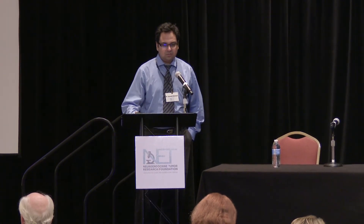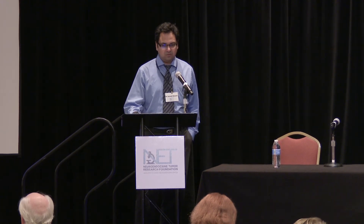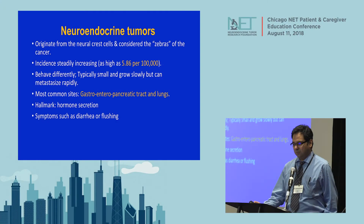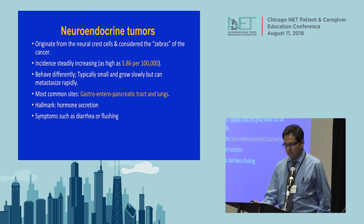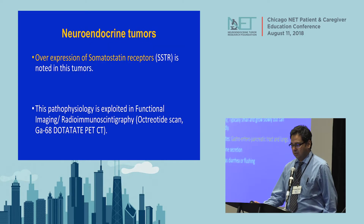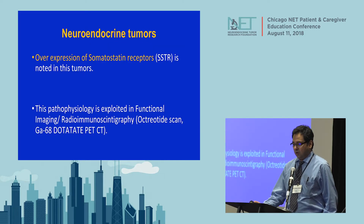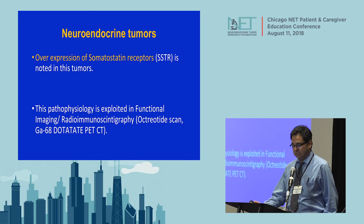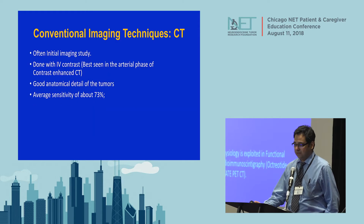Just a brief one slide on neuroendocrine tumors. They originate from neural crest cells. The incidence is slowly rising, and the most common sites are the gastroenteropancreatic tract and the lungs. Overexpression of somatostatin receptors is the pathophysiology exploited in functional imaging — in OctoScan and Gallium-68 DOTATATE PET.